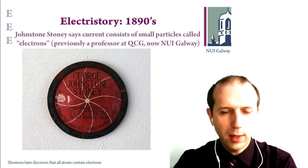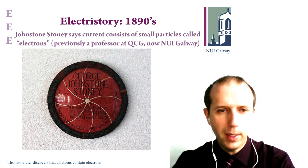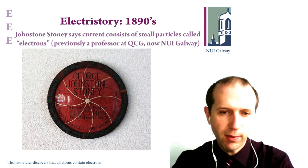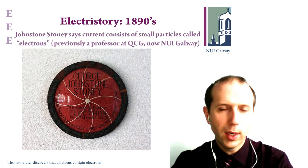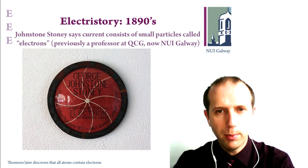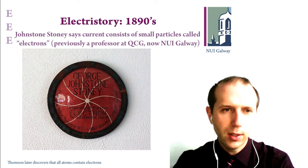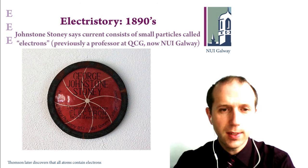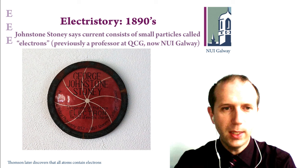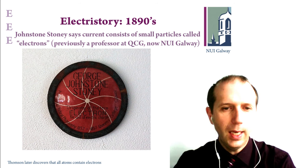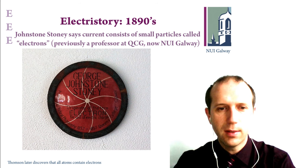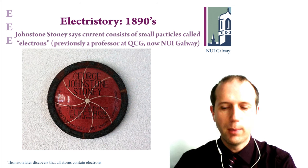NUI Galway has a nice connection to the story of electricity and electronics, due to an Anglo-Irish professor called George Johnston Stoney. Stoney was a professor at NUI Galway from 1852 to 1857, when it was called Queen's College Galway. During that time, he came up with the theory that current consisted of small particles, which he termed electrons — and he is the person we attribute the name 'electron' to. This is fascinating when we think of how pervasive the word 'electron' has become in everyday usage through email and electronics.